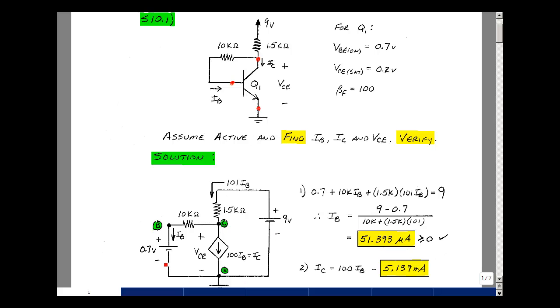If I go around this loop over here, I have just batteries and things that have I sub B in it. The rise in voltage is 0.7. The base current is flowing, creating a drop this way. So I get a rise in voltage of 10K times I sub B. And then likewise, I'm getting a rise in voltage of 101 I sub B times 1.5K. So a rise in voltage, a rise in voltage equals the drop of 9.